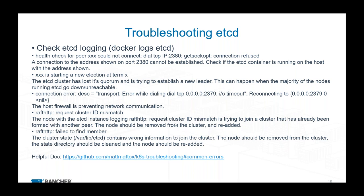The other big one is the ID mismatch. etcd's data safety and protection are the number one priority. If etcd ever goes split-brain, one of the ways it can detect that is by an ID number. In this case, one of the nodes thinks it's now part of a new cluster and is trying to talk to the others. etcd goes: something's clearly wrong, I don't know who's the right member, so I'm just going to stop. That's when you need to intervene and run through the etcd restore procedure.